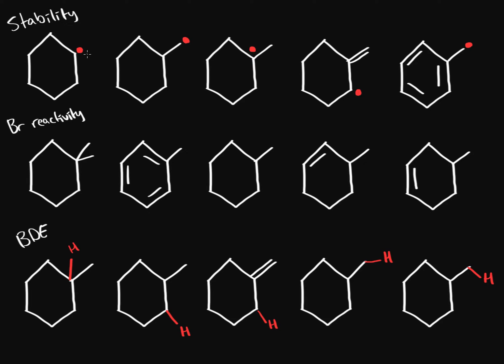What stabilizes a radical? We have resonance stabilization and we have a carbon being more substituted — so being a tertiary carbon versus a primary carbon. Things that make it worse are the inductive effect, but we don't have any fluorines, chlorines, or bromines here, so we don't have to worry about inductive effect. Two main factors: resonance and being more substituted.